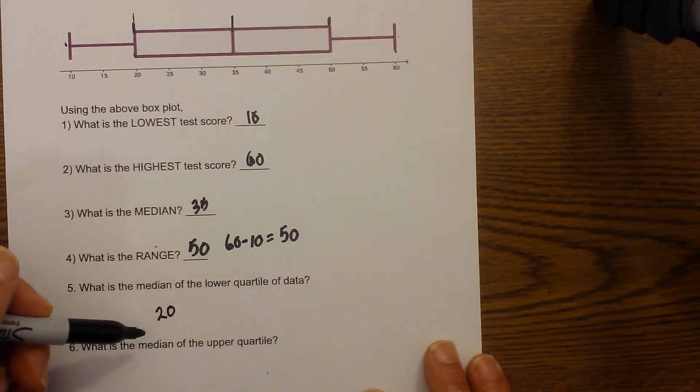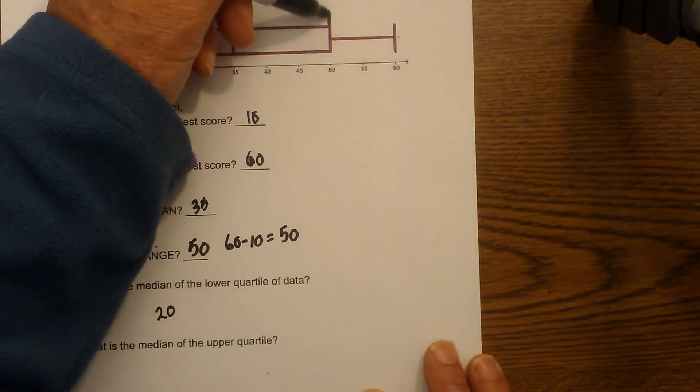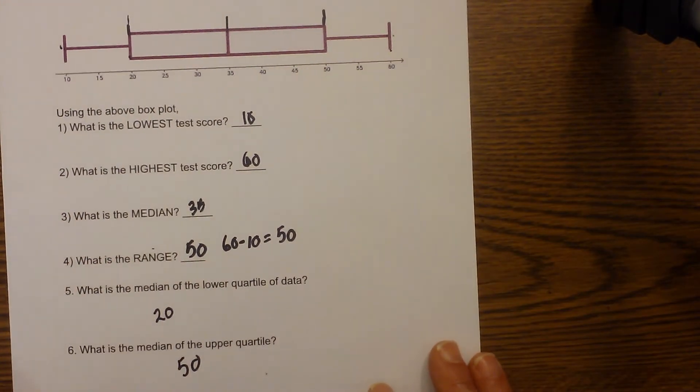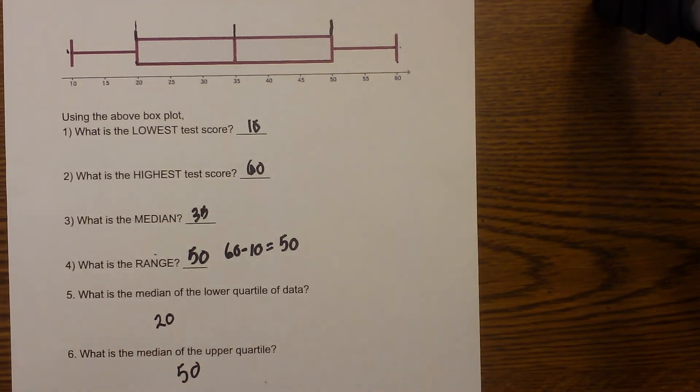And what's the median of the upper quartile? That would be the upper quartile, and that is 50. Okay, I hope that helps in reading a box and whisker plot. Remember Moving Math uploads a new math and science video every day. Please subscribe and share.